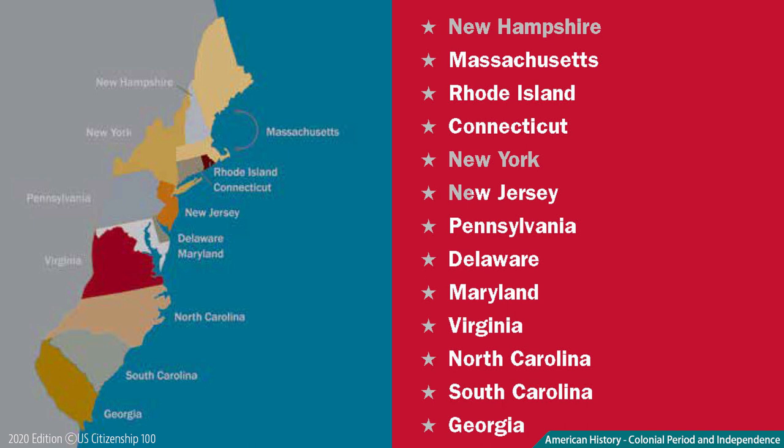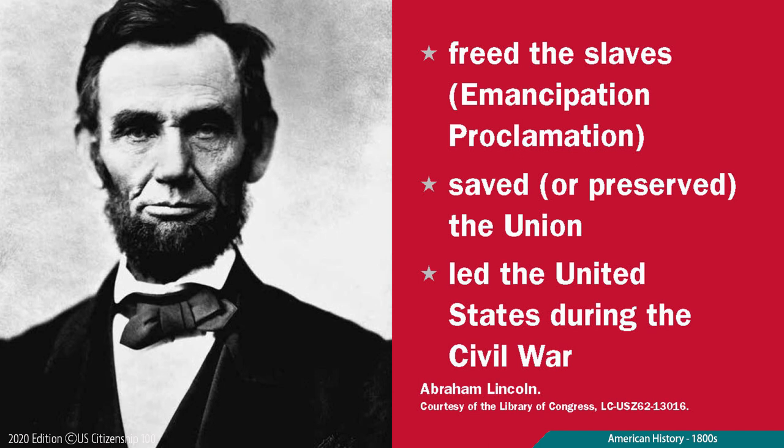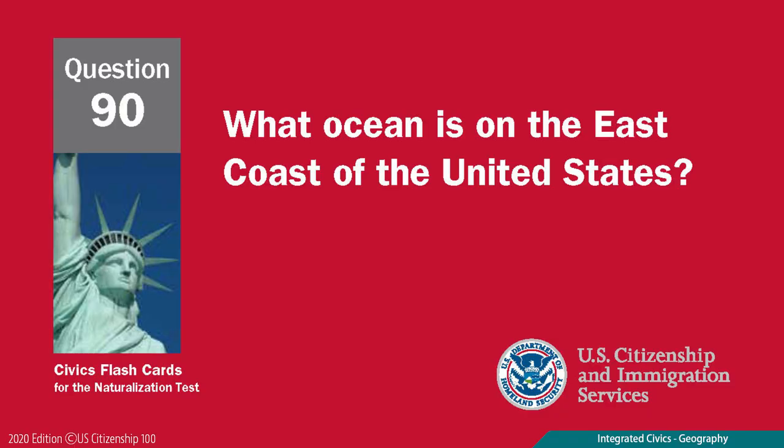What was one important thing that Abraham Lincoln did? Freed the slaves — Emancipation Proclamation. What ocean is on the east coast of the United States? Atlantic Ocean.